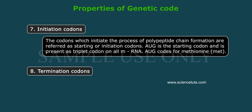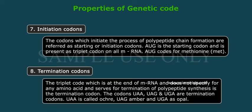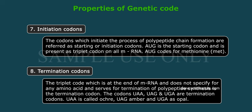Property 8: Termination codons. The triplet code which is at the end of mRNA and does not specify any amino acid, and serves for termination of polypeptide synthesis, is the termination codon. The codons UAA (called ochre), UAG (called amber), and UGA (called opal) are the three termination codons.